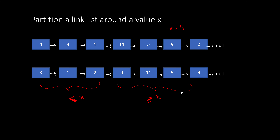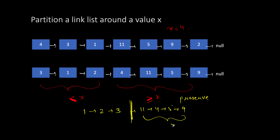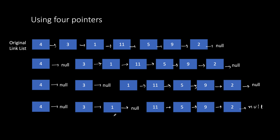Before jumping into the solution, we can ask a clarifying question: whether we have to preserve the relative order of elements in the modified list. For example, if 4 comes before 11 in the original, should it also appear before 11 in the modified list? For this question, let's assume we don't have to preserve the order. So 3, 1, 2 can be in any order, and 4, 11, 5, 9 can also be in any order — the only constraint is that all elements less than x come before all elements greater than or equal to x.